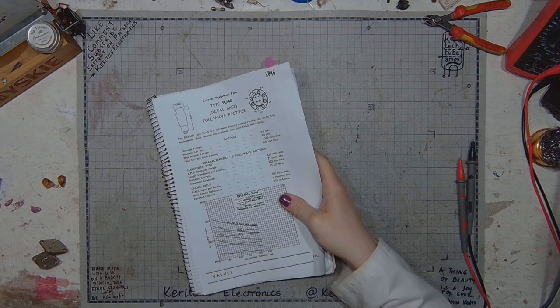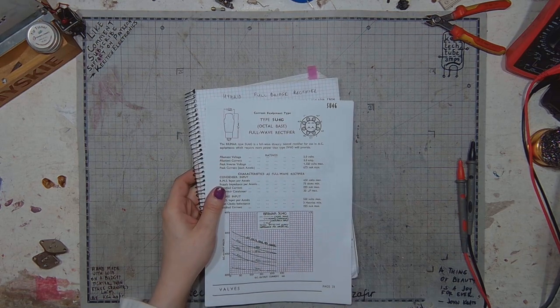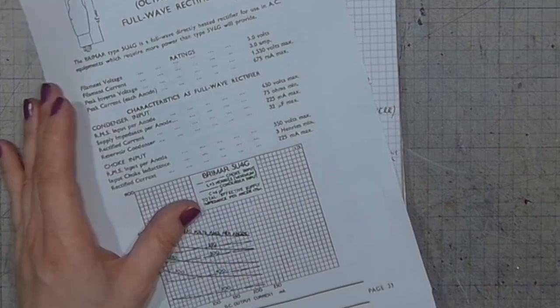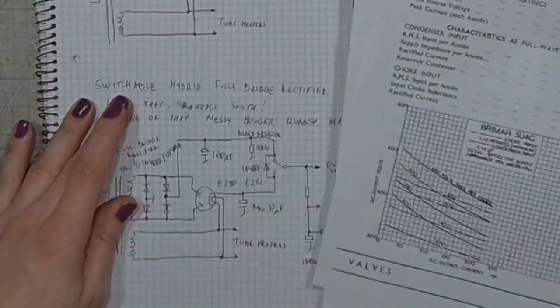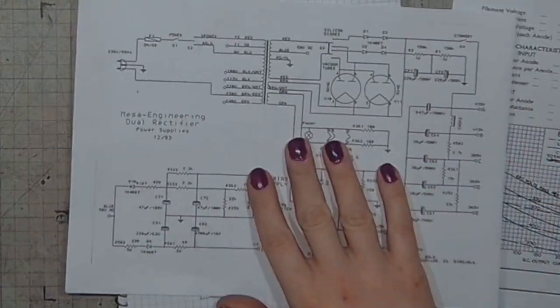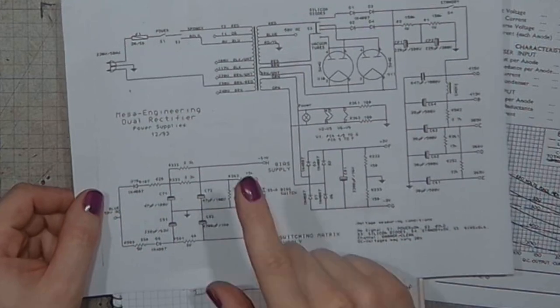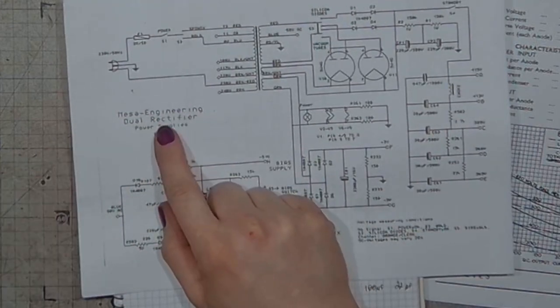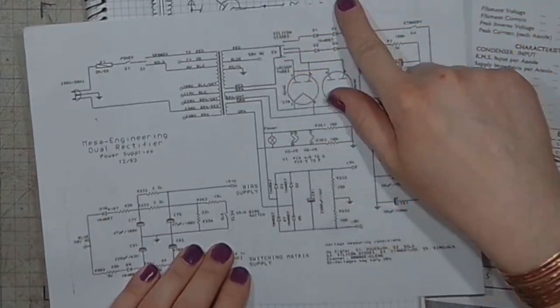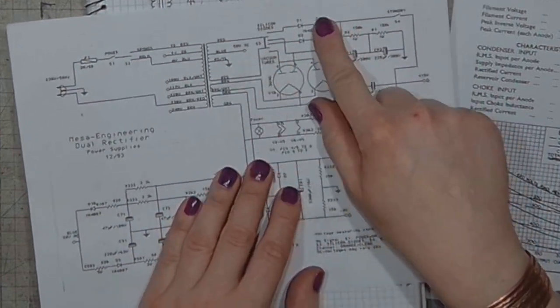So we are now at the bench. What I'm first going to show you is the Mesa Boogie dual rectifier power supply schematic from 93, and the part that is interesting in it is the switchable rectifier circuit.